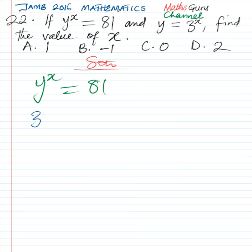So we have 3 raised to the power of x, all raised to the power of x, equal to 81. So we have 3 raised to the power of x times x, which is x squared, equal to 81.